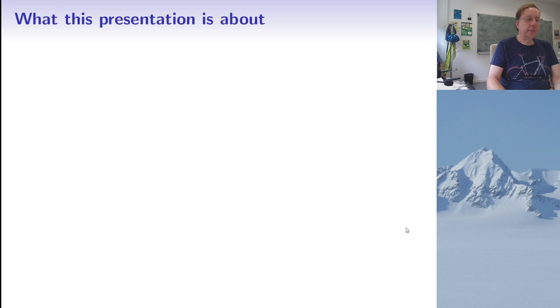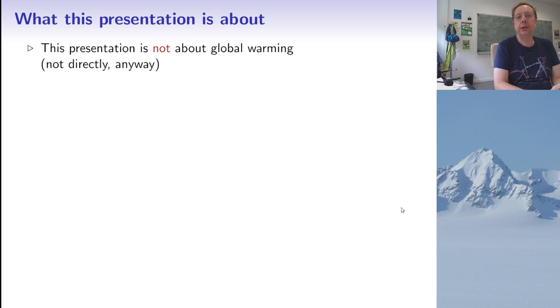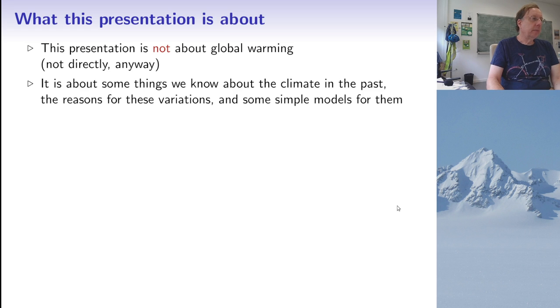So first of all let me make clear what this presentation is. It is not going to be a presentation about global warming, though of course when you talk about climate models there is always some link with global warming and climate change. But it is going to be about a few things that we know about what climate on the earth was in the past, how we know these things, and what we understand about the causes of climate variations and some simple models for them.